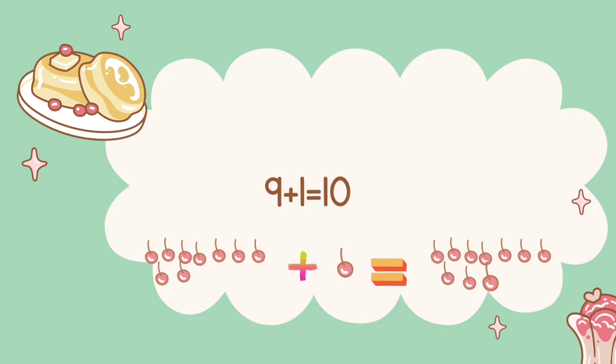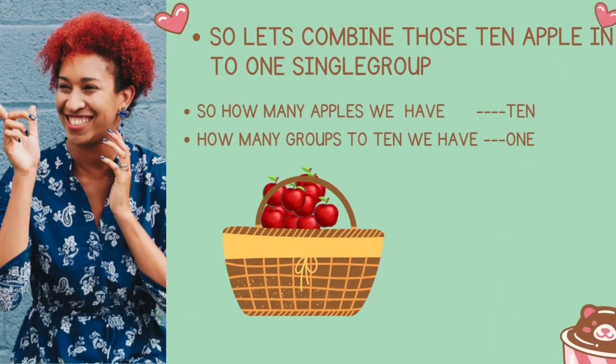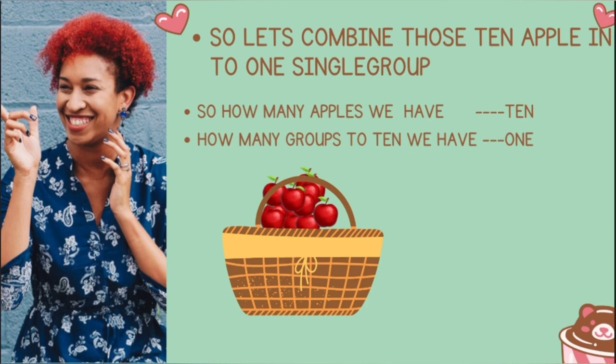The solution is to use groups to help us count. If we pick just one more apple we will have 10, so let's combine those 10 apples into a single group. How many groups of 10 apples do we have? Just one. If we use another number place, instead of using it to count individual apples one at a time, we are going to use it to count apples 10 at a time.